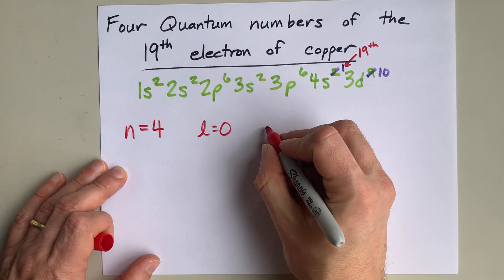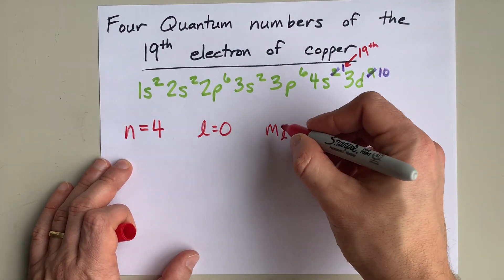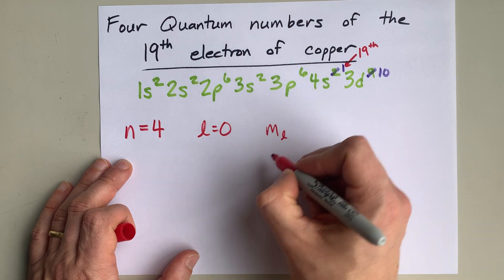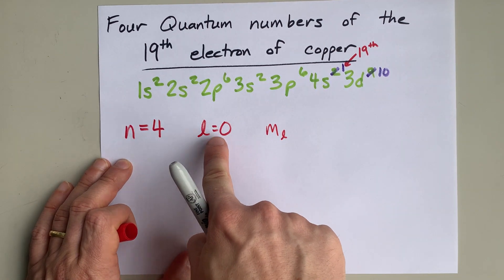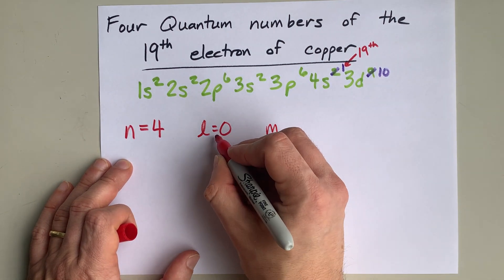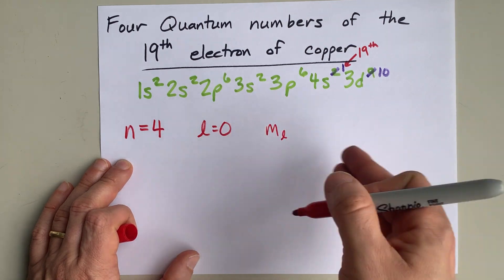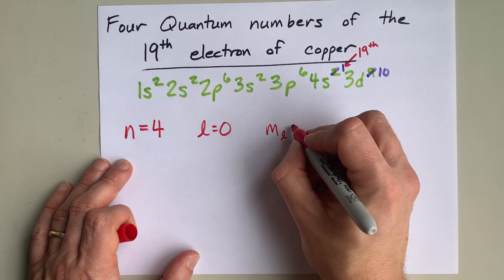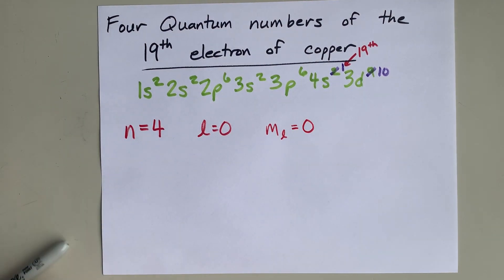Now, what is ML? The allowed values of ML are always based off of the L that you're dealing with. When L is 0, ML is allowed to be anything from negative 0 up to positive 0. But actually, both of those are 0, so there's no other real choice here for ML.